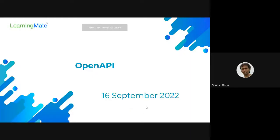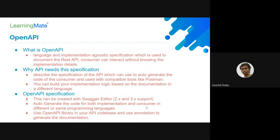Today we'll be looking into how we can use Swagger and OpenAPI. First of all, what is OpenAPI? OpenAPI is basically a specification for describing or documenting a particular REST API. This OpenAPI is generally written in either JSON format or YAML format, but it is totally language independent, so you may create a REST API in Python, Go, PHP, Java, .NET, or whatever language.